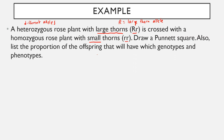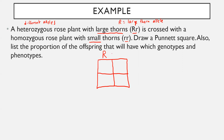It wants us to draw a Punnett Square and list the proportion of offspring that will have which genotypes and phenotypes. I'll draw a square divided into four portions. The plant with large thorns goes on top: capital R, lowercase r. The plant with small thorns goes on the side: lowercase r, lowercase r. To fill it out, we drop each allele down or across. Capital R comes down, lowercase r comes over. Lowercase r comes down, lowercase r comes over. Capital R comes down, lowercase r comes over. Then lowercase r and lowercase r.